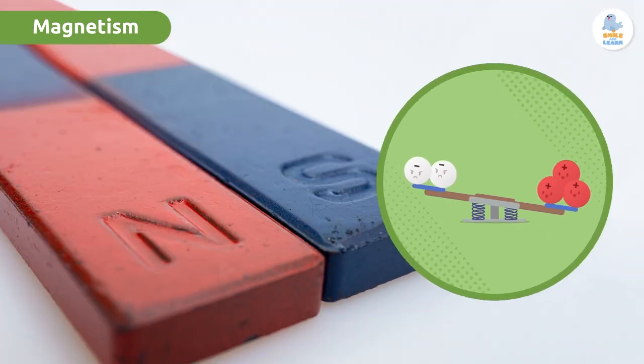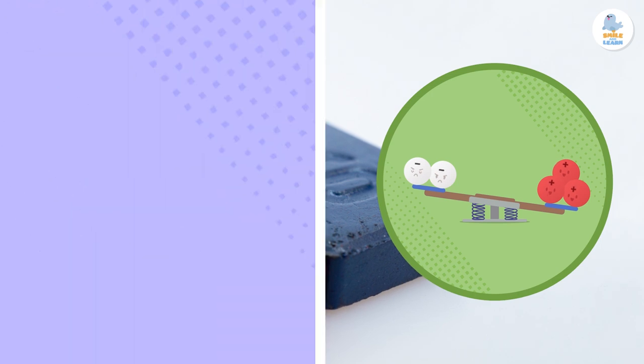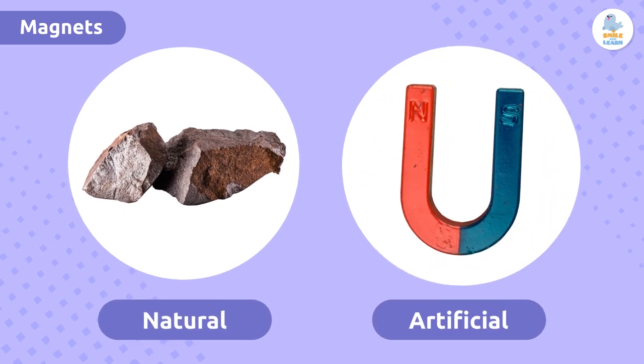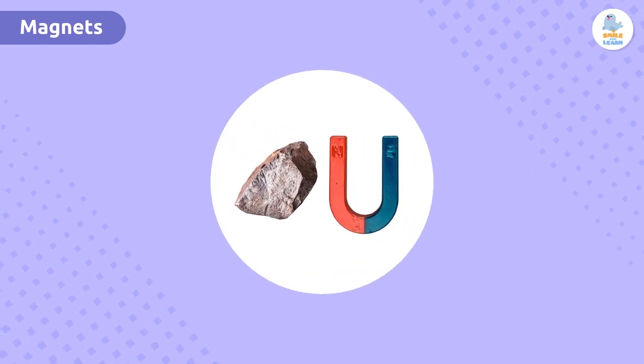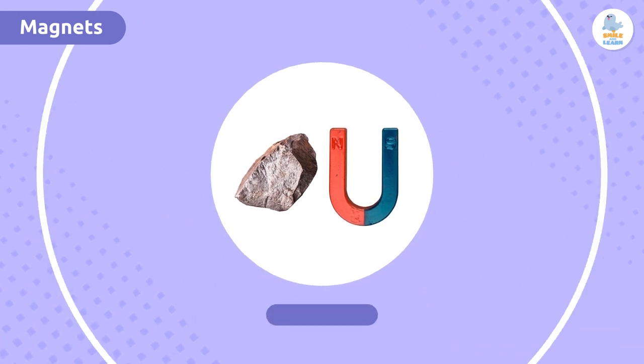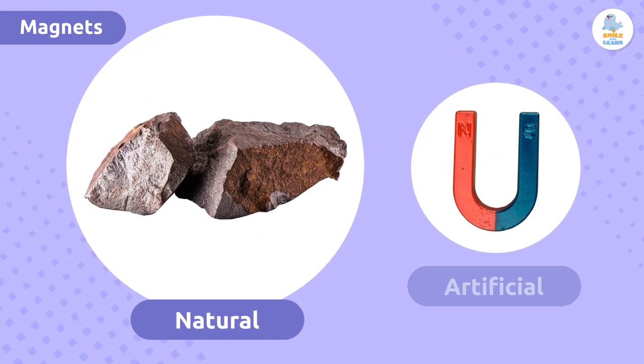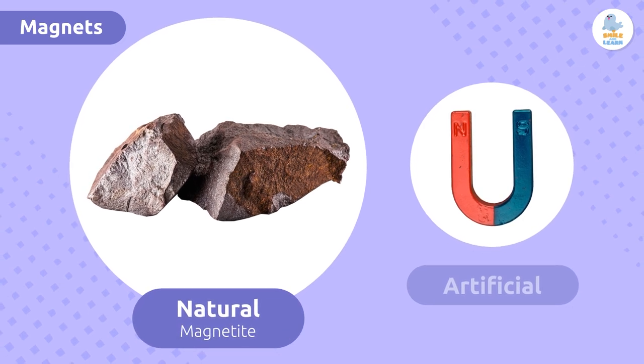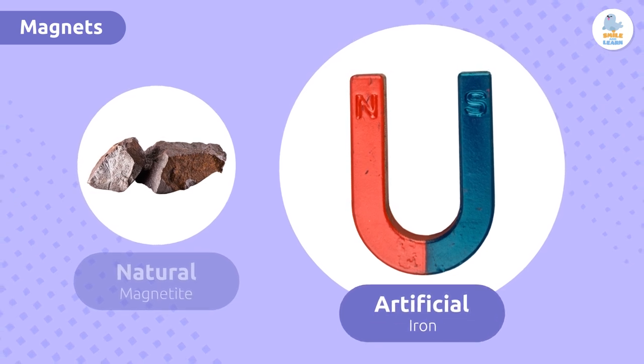Magnets can be both natural and artificial. One of their main properties is the ability to attract objects made of iron and other metallic materials. This is called magnetism. Natural magnets are found in nature—an example is magnetite. Artificial magnets are made by humans from different metals like iron or steel.